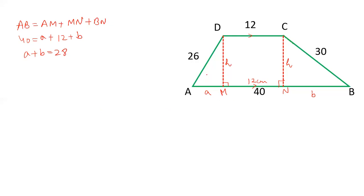And we have two right angle triangles. A square plus H square is equal to 26 square by Pythagoras theorem. And in second right angle triangle, B square plus H square is equal to 30 square. And we know that A plus B is 28.